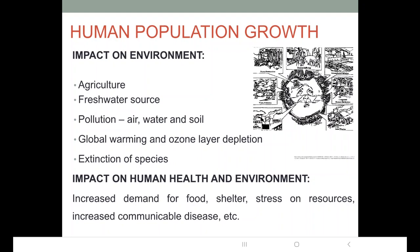There is also declining food security. Food security means if a country is capable of feeding its entire population, it has food security. But if resources are not able to feed the growing population, there is a decline in food security. There are also uncontrolled epidemics of communicable diseases, because new strains of viruses and pathogens responsible for various diseases are coming up.